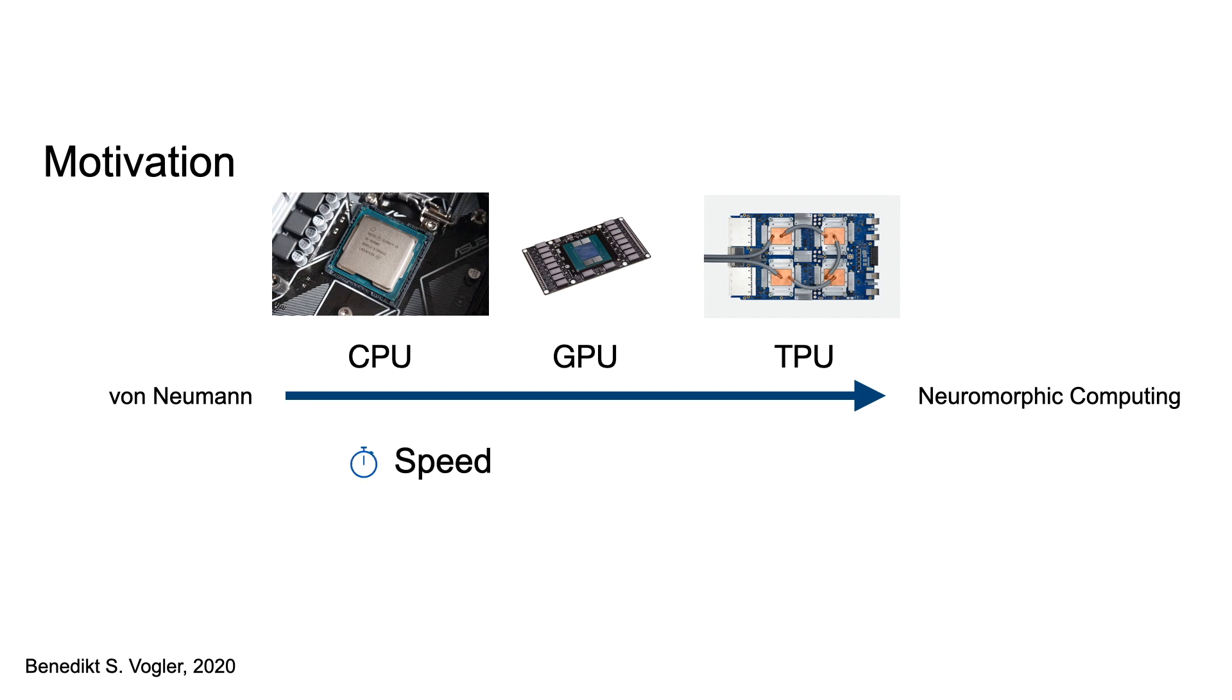The benefit shows in the speed, its energy consumption, and with those its area. They are also biologically plausible. Because of this, they are of great interest for mobile real-time systems. We want to take a look at how to train spiking neural networks, and what is possible with them.